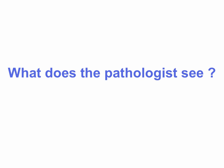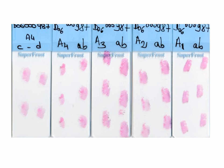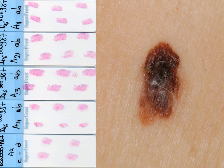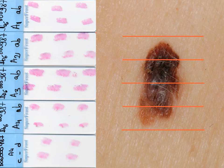The next question is: what does the pathologist see? These are all the histological slides that the histopathologist has from this case. On the left side, you see the corresponding histopathological slides, and on the right side, the lesion. The lesion is excised under local anesthesia, and then in the laboratory it's cut into different pieces. Every one of these different pieces can be found on a different slide of the histopathology.